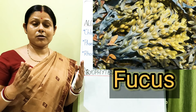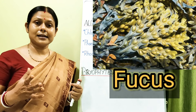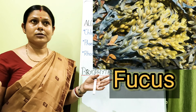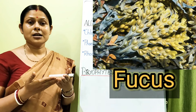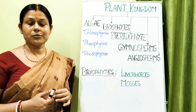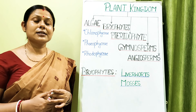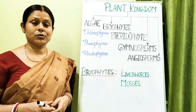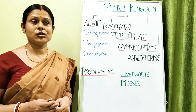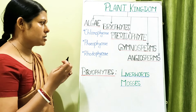The fronds of Fucus are serrated, allowing water to pass through easily without fragmenting the organism. These organisms reproduce by vegetative propagation through fragmentation. They also reproduce asexually by means of zoospores, which are produced inside a zoosporangium.